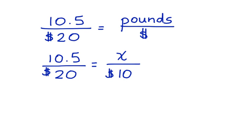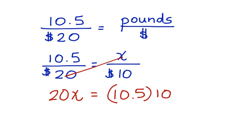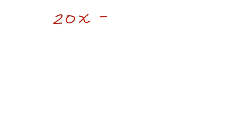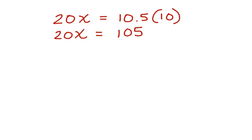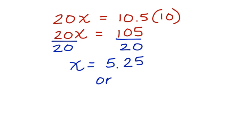Now we can cross multiply and solve this proportion. So first, let's do 20 times x is 20x equals 10.5 times 10. 20x equals 10.5 times 10. Let's bring down the 20x. 10.5 times 10 equals 105. Now we're going to divide both sides by 20, and x is equal to 5.25, or we could say 5 and 1/4 pounds.